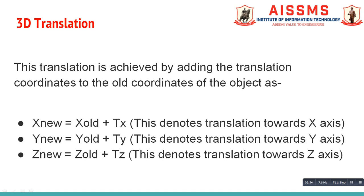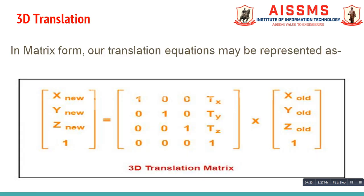The formula to calculate Z new is Z old plus TZ, where Z new is the Z coordinate of the point after translation and TZ is the translation factor along the Z axis. This equation denotes translation towards the Z axis. In matrix form, our translation equations can be represented as follows, and it is known as the 3D translation matrix.